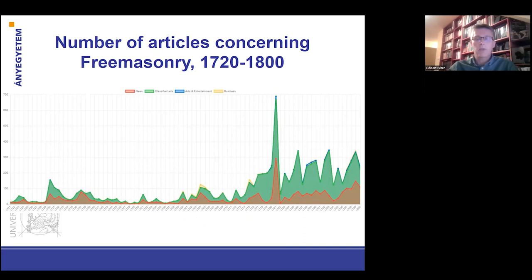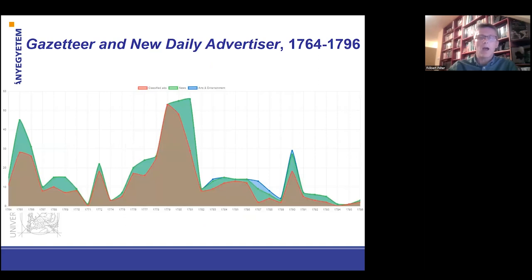I must note that this type of visualization could be misleading if we don't know the context of 18th century newspapers. 18th century periodicals and journals often plagiarized each other, meaning you can find a number of duplicates of the very same articles. Another problem is that many newspaper issues are incomplete — several newspapers have been lost over the centuries. That's why I analyzed long-running and comprehensive newspapers such as the Gazetteer, a new daily advertiser. It also shows a peak in 1781, but it does not contain any duplicate items.